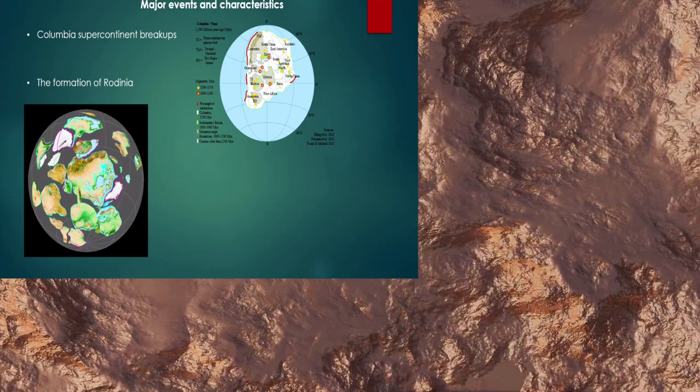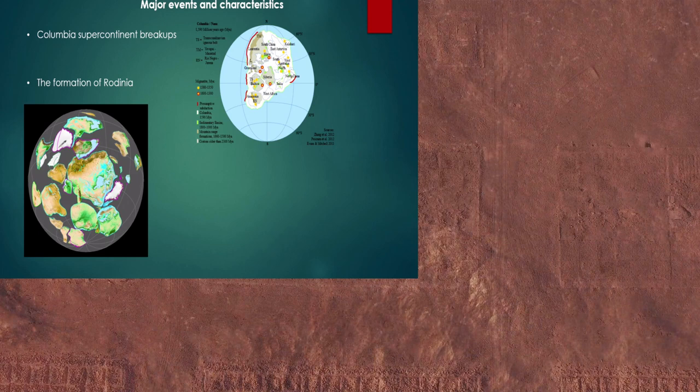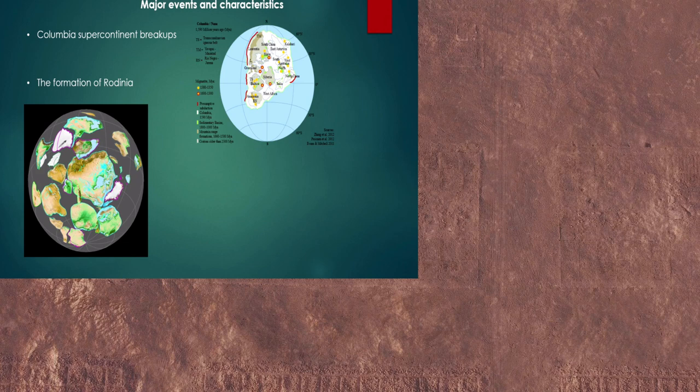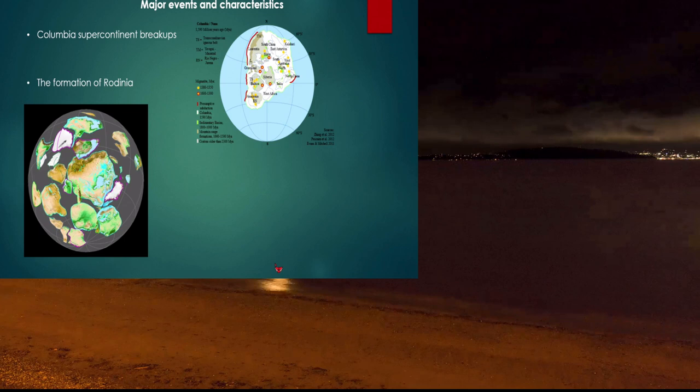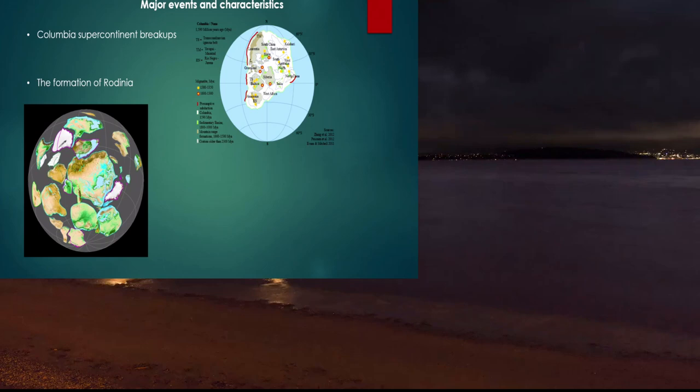Major events and characteristics of the Mesoproterozoic Era: the Columbia supercontinent breaks up. To view this continent on the right here. The formation of Rodinia takes place in this era as well, and Rodinia is pictured here.